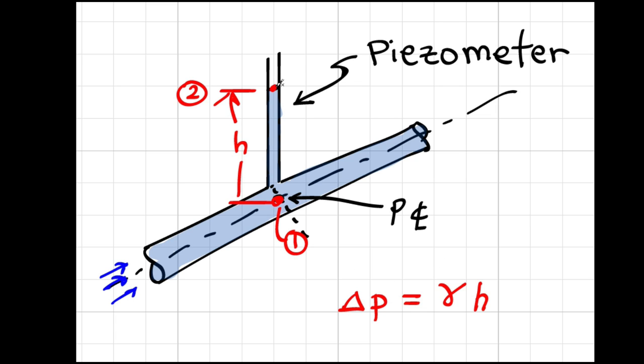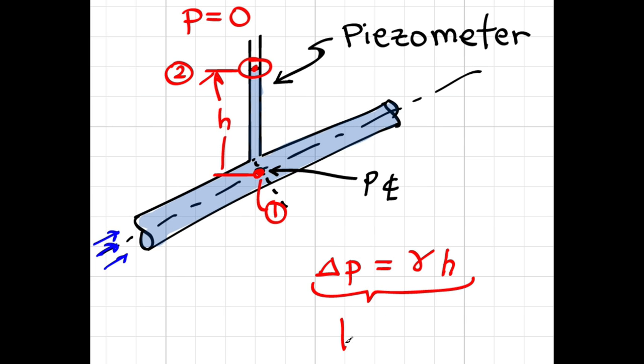Now at point two, that would be right here, the pressure is zero gauge because the liquid is exposed to the atmosphere. So I can set this equal to zero, and the resulting equation I'll get is that the pressure at one,